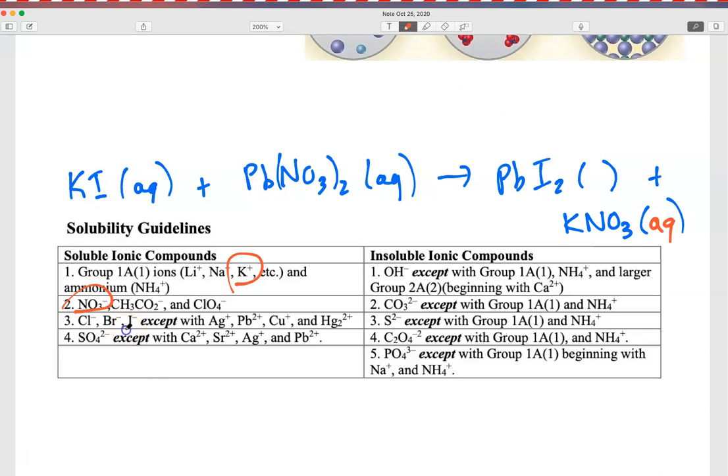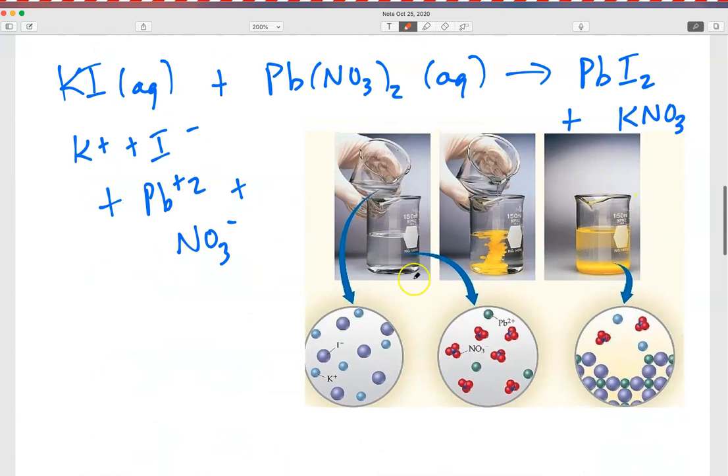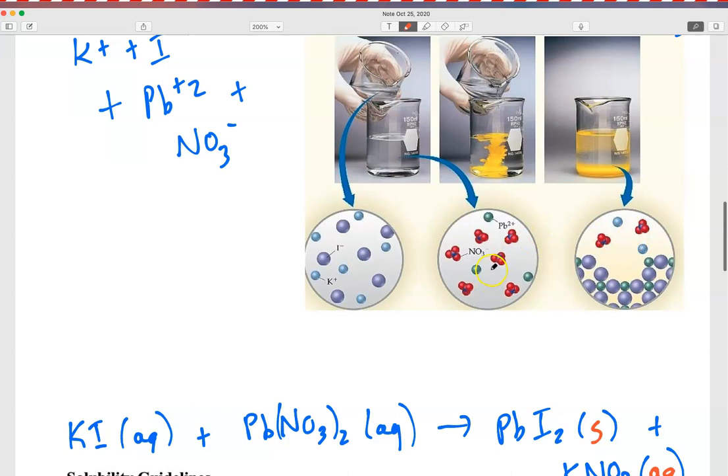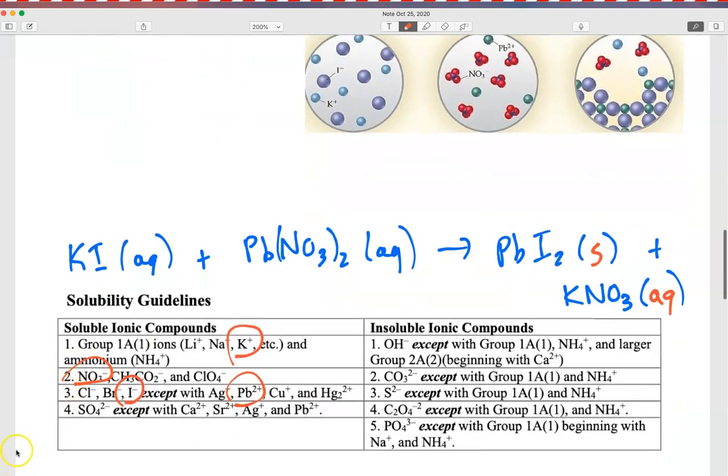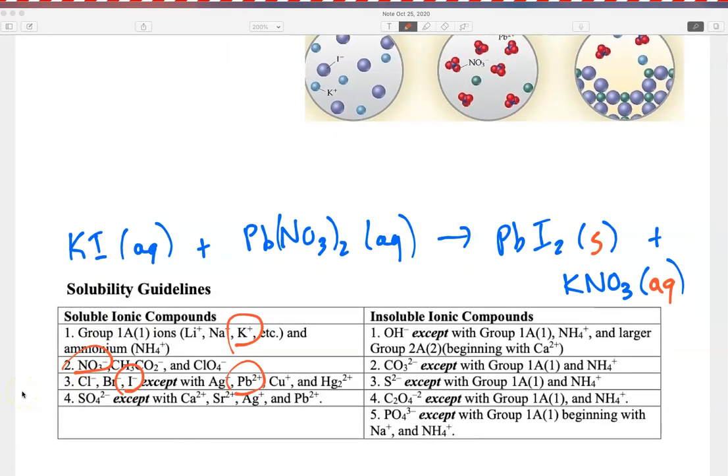So that means that the lead iodide must be our solid. And indeed, if I look at the iodide, those are soluble except with things like lead +2. So the lead +2 iodide is my solid. And again, that's the yellow compound that's being formed in these pictures here. And you can see how we start out from dissolved ions. We end up with still some dissolved ions, the potassium and the nitrate, but the lead and the iodide are forming an extended solid structure.